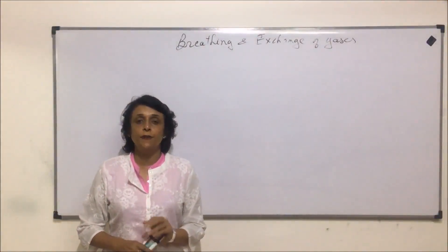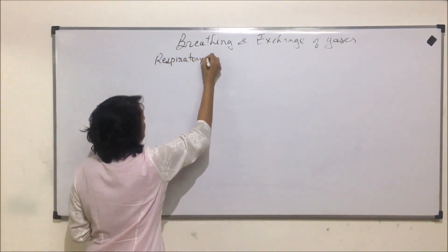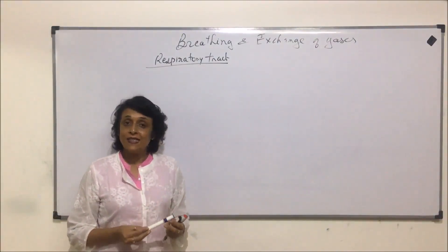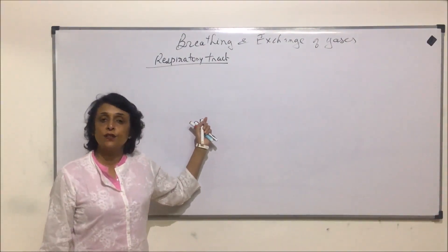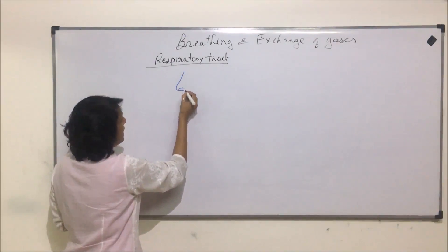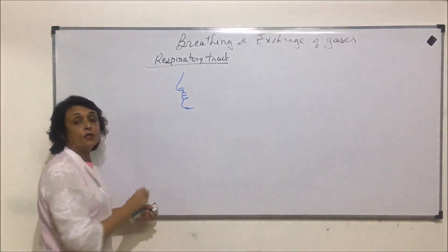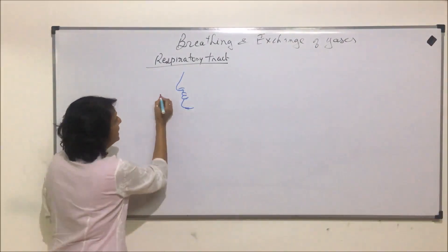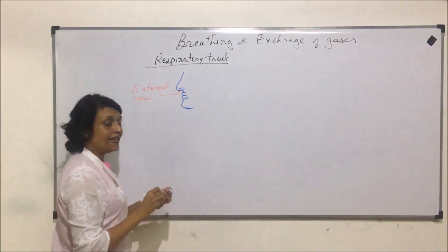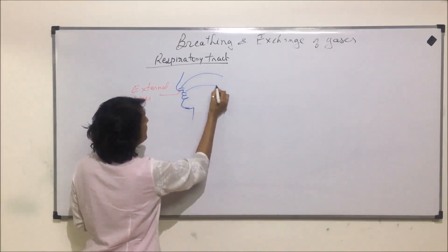In this segment we will start with the respiratory tract. We will discuss external nares and the nasal chambers. When we draw the face of a person, the anterior openings we see in the nose region — these two openings — are called external nares. These external nares lead into a passage.